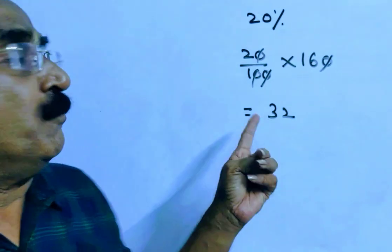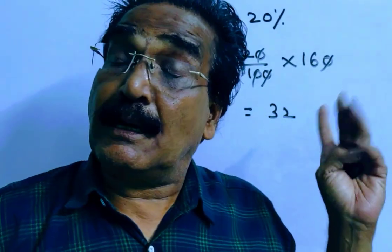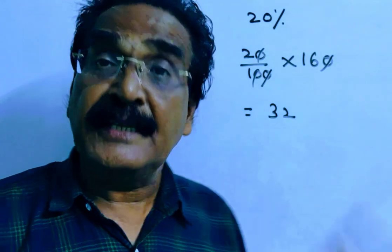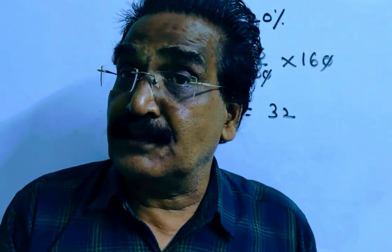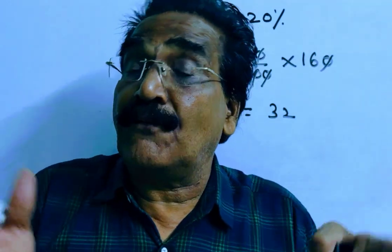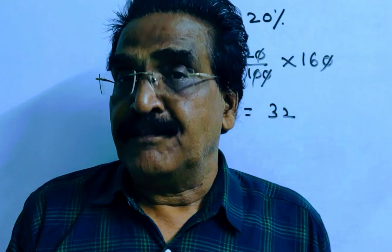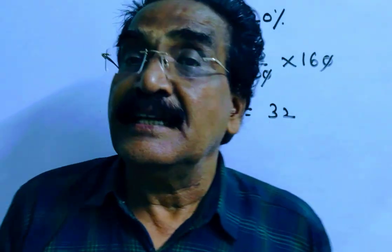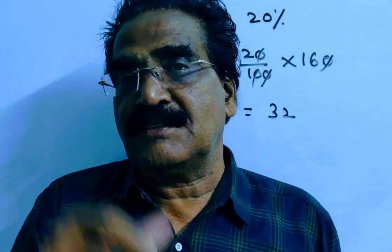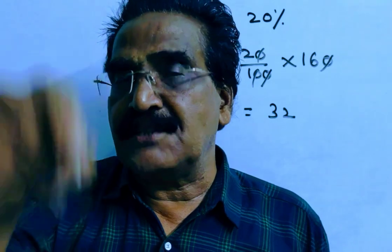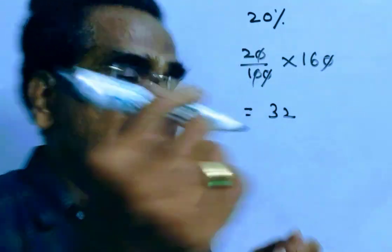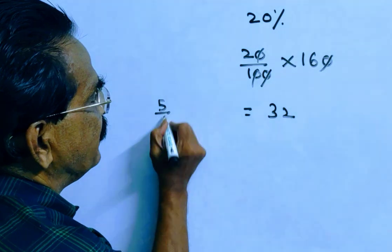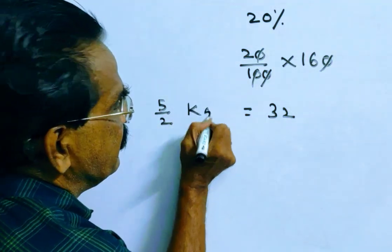Because of this reduction, a purchaser is able to get two and a half kg more sugar. That means this 32 rupees is the reduced price of two and a half kg of sugar. Two and a half means 5/2 kg.